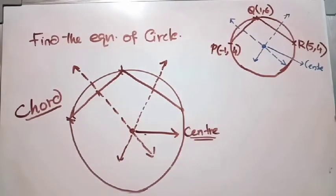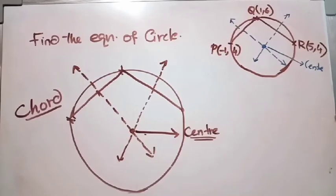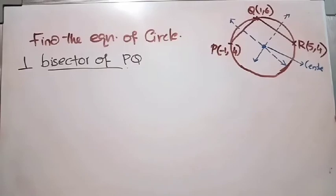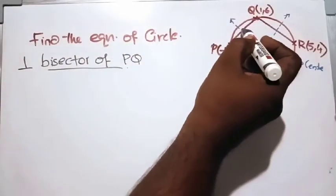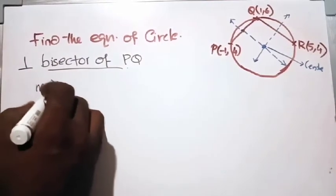So let's find the perpendicular bisectors. Finding the perpendicular bisector means finding the equation of the perpendicular bisector line. We are going to find the equation of the perpendicular bisector of PQ. For that, let's first find the midpoint of PQ.